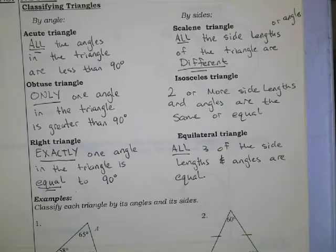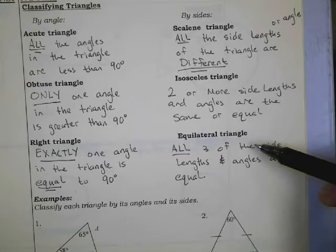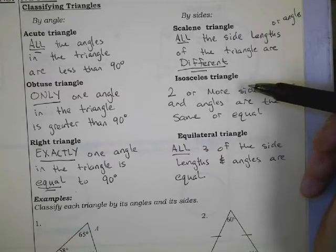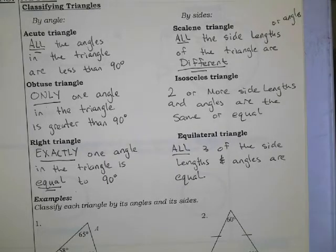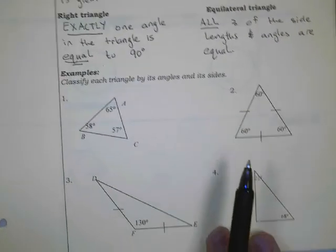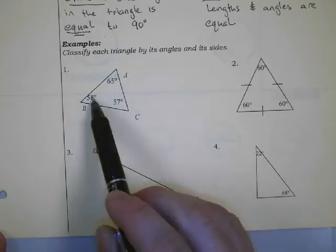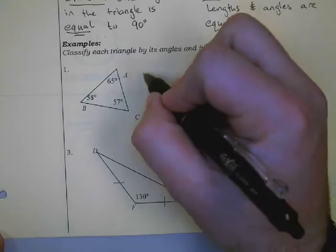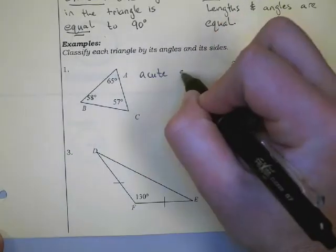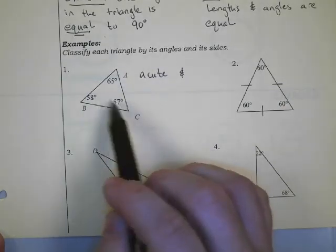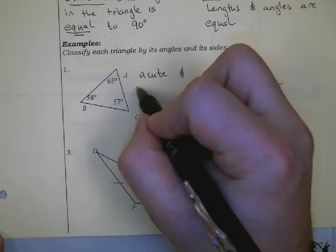Something I want to point out is that if a triangle is equilateral, it is also isosceles. So looking at number one in our examples, we see the three angles are all less than 90 degrees, so this is an acute triangle. And since they're all different values, it's also scalene.